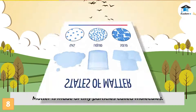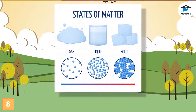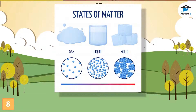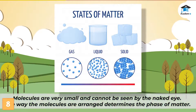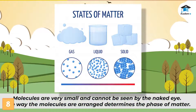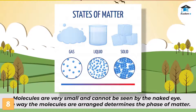Matter is made of tiny particles called molecules. These molecules are the smallest particles of a material that carry the properties of the material. Molecules are very small and cannot be seen by the naked eye. The way the molecules are arranged determines the phase of matter.